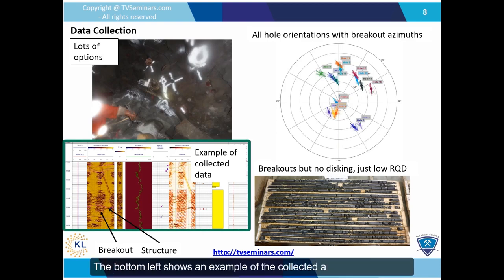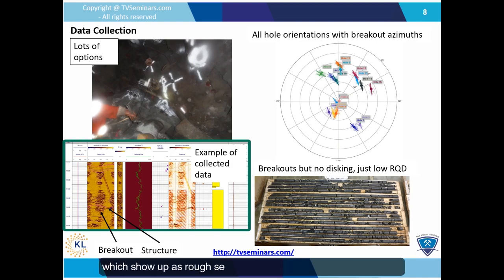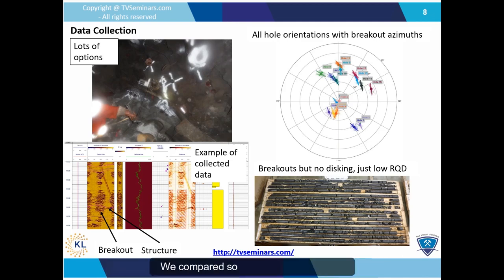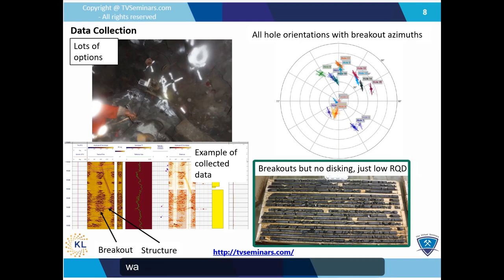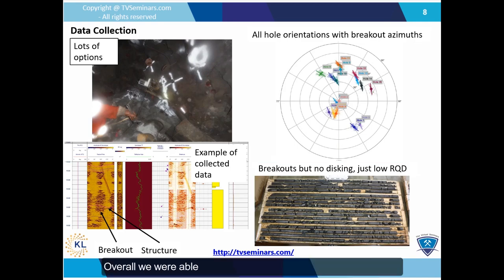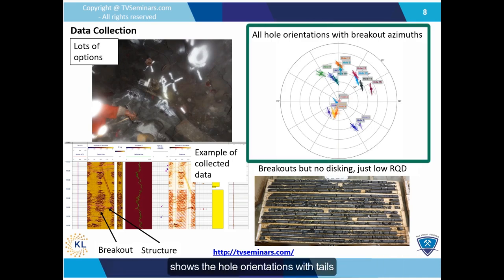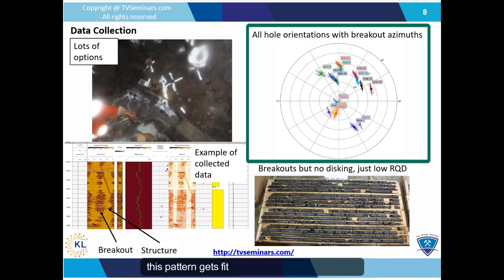The bottom left shows an example of the collected and processed data. We get unrolled sections of the hole shape and reflectivity, which let us see breakouts — showing up as rough sections on opposite sides of the borehole — and structures which show up as sinusoids on the unrolled section. We compared some collected data to pictures of the drill core and found it interesting that we did not always see the same structural features or signs of stress like disking. Overall, we were able to survey 17 holes in a variety of orientations. The stereo net shows the hole orientations with tails indicating the average breakout azimuth, and you can see a pattern which gets fit to a theoretical stress tensor.